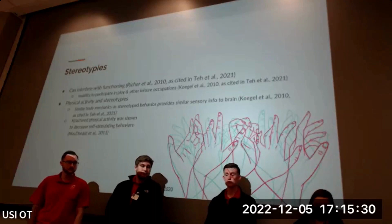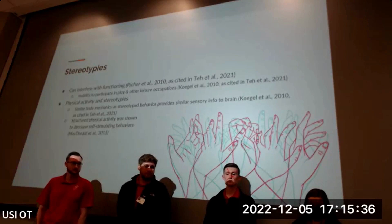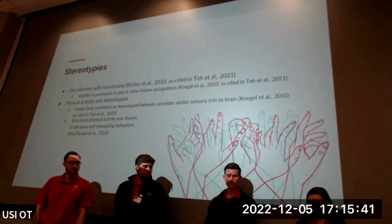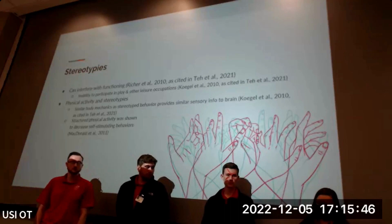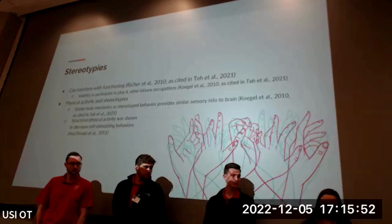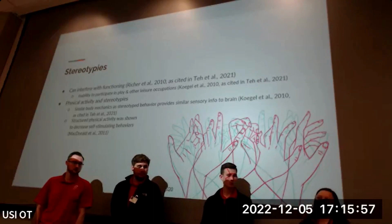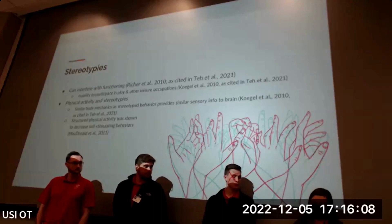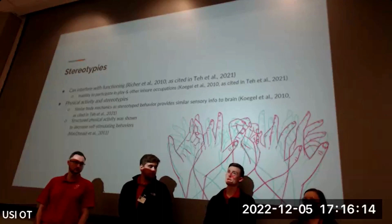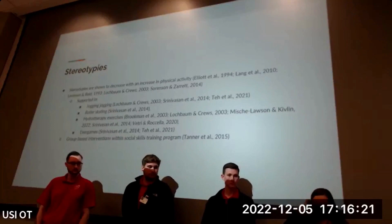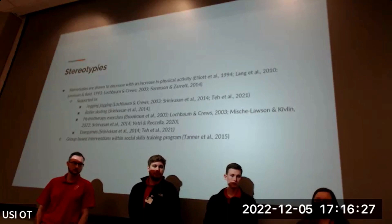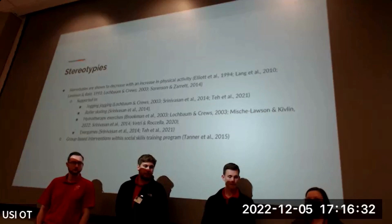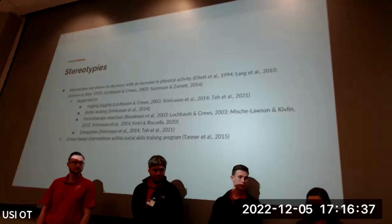Individuals with higher sensory seeking behaviors participate in more physical activity. Stereotypical behaviors, defined as repetitive movements or sounds such as body rocking, head nodding, finger tapping, hand clapping, waving, and pacing, have been identified as interfering with function in individuals with ASD. Sports or physical activities with similar body mechanics to a child's stereotyped behaviors can provide similar sensory input. Increases in structured physical activity have been shown to decrease self-stimulating behaviors, supported through jogging, roller skating, hydrotherapy including swimming, and exergames such as virtual reality or Wii Fit. Group interventions within social skills training programs have also been shown to decrease stereotypic behaviors.